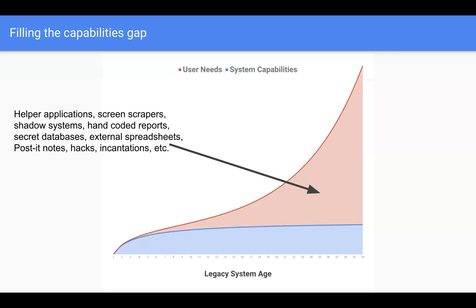What are these workarounds? Helper applications bolted on to the mainframe to act as an intermediary. Screen scrapers — essentially taking what's on the green screen and putting it into a web format. Shadow systems operating on the side. Hand-coded reports because the database doesn't do exactly what we want. Secret databases — downloading raw data from the data warehouse, joining tables, building your own reports because the data warehouse doesn't support that. External spreadsheets for pivot tables and graphing. Post-it notes, hacks, incantations — whatever it takes to get information out of the system.